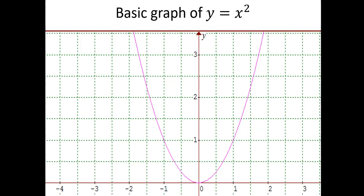First of all, let's look at the basic graph of y is equal to x squared. The shape that you can see here in this graph is known as a parabola — we spell that P-A-R-A-B-O-L-A. This parabola is an upright parabola, which means it is the right way up. We have a very important point here, which is the turning point of the graph, located at the point 0, 0, or the origin.